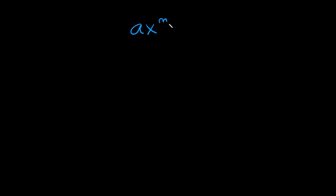A term we can represent by this little equation right here: a times x to the m. So a represents your coefficient — just the whole number — and x represents your variable, and m represents your exponent. We have to make something clear about the exponent: it can only be a positive integer, so something like 0, 1, 2, 3, all the way to infinity. It can't be a negative number, and it can't be a fraction or anything like that.